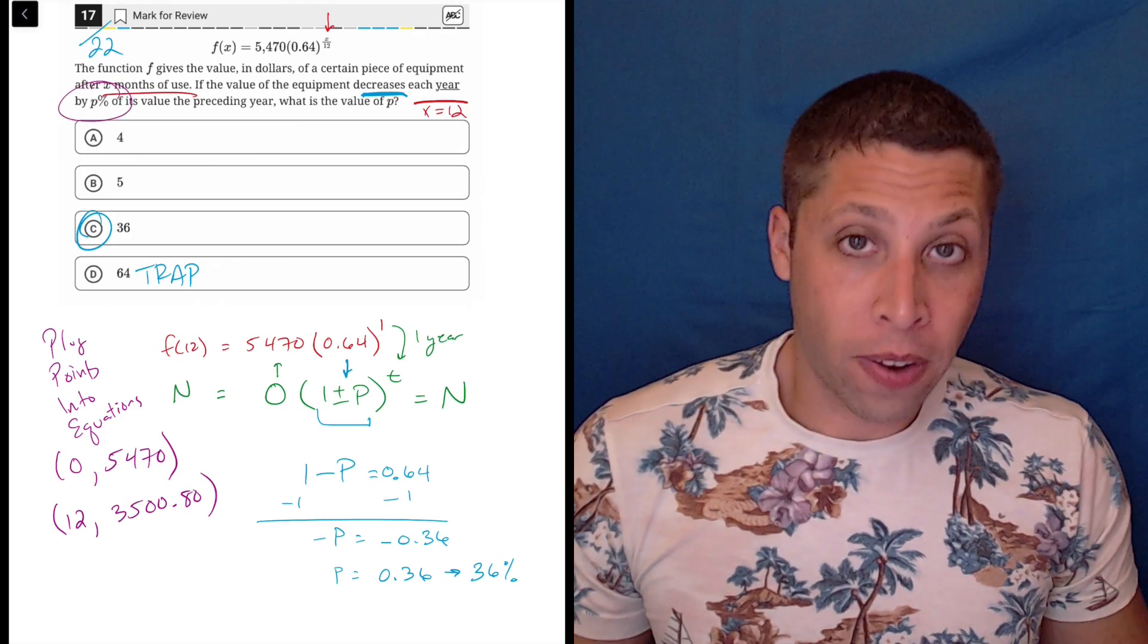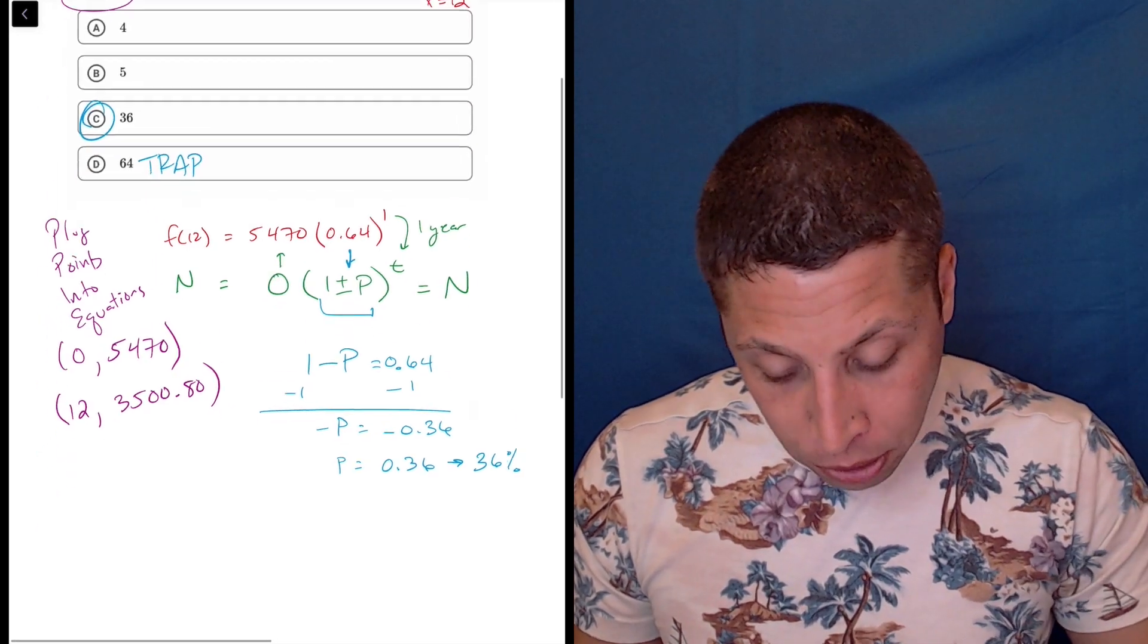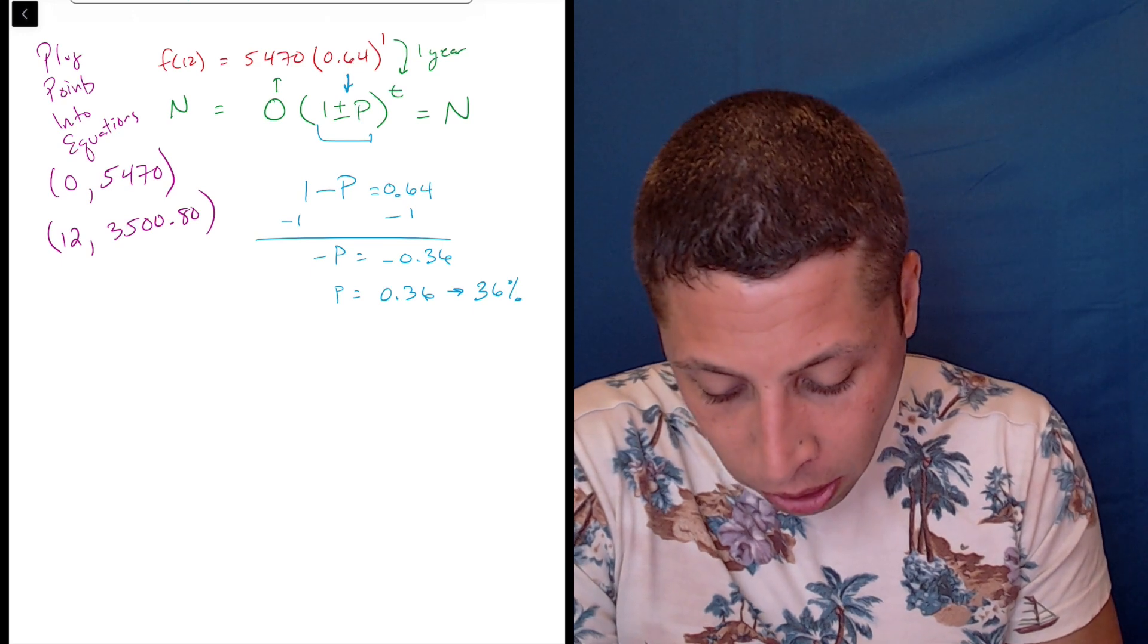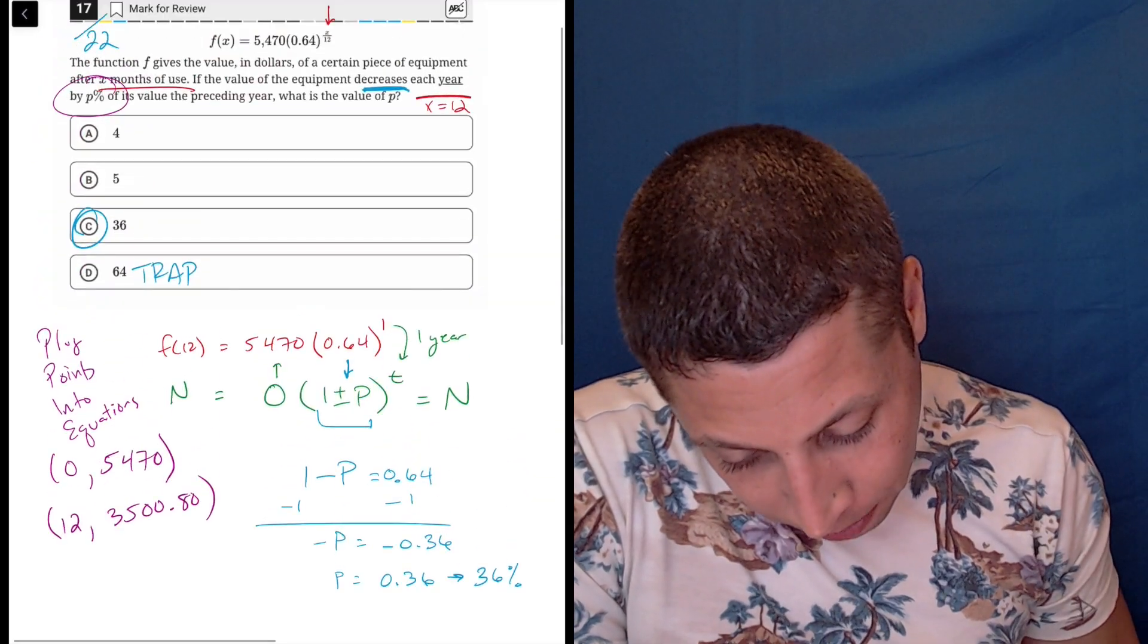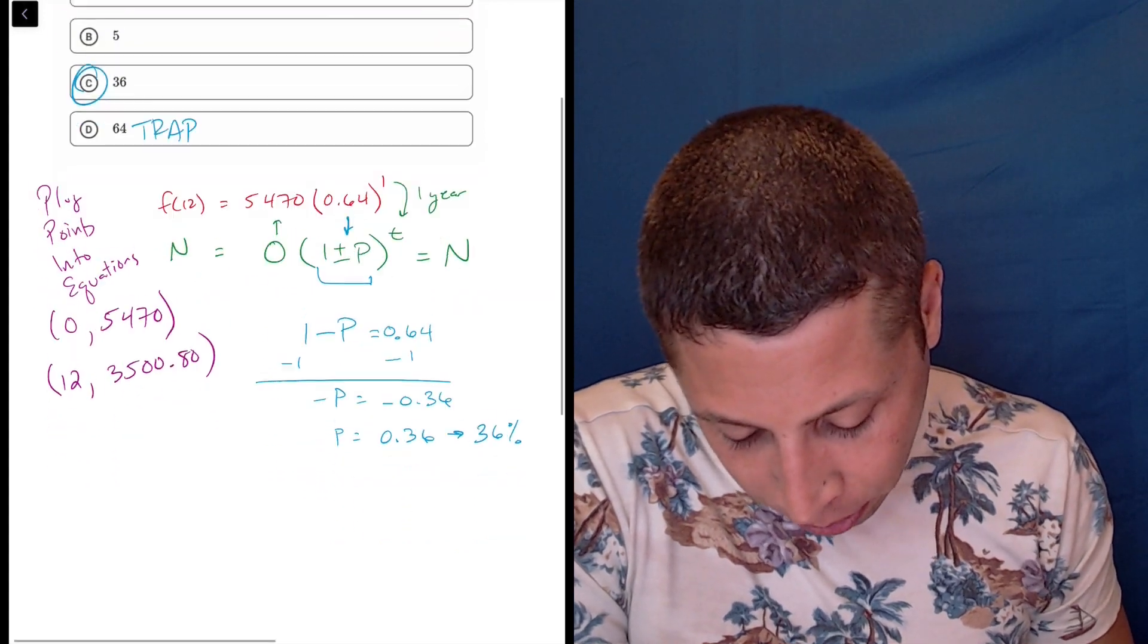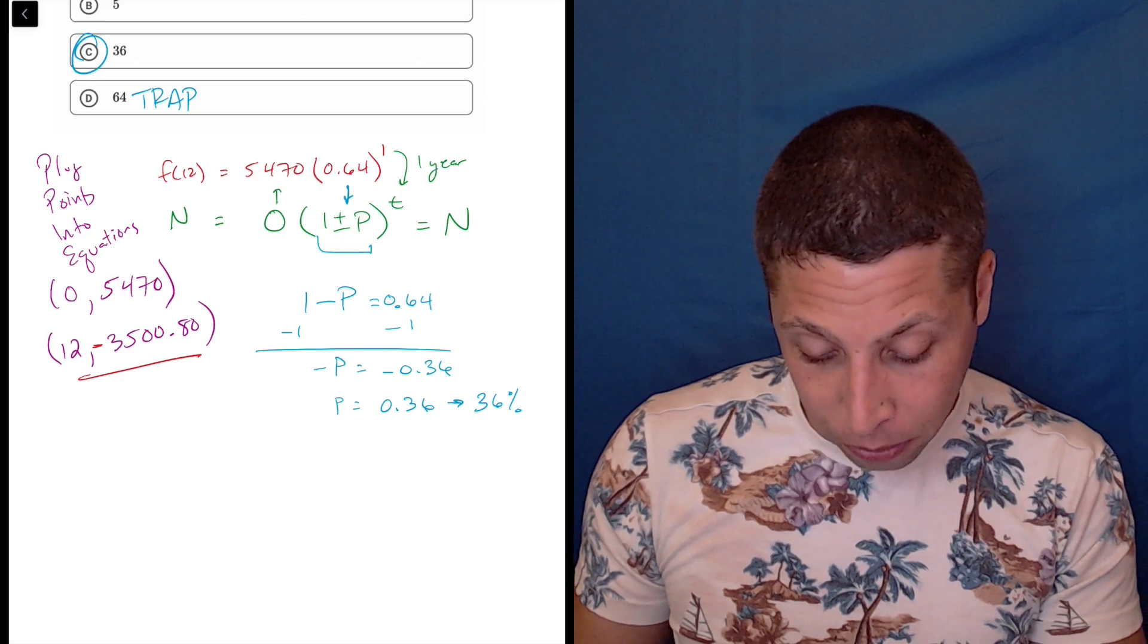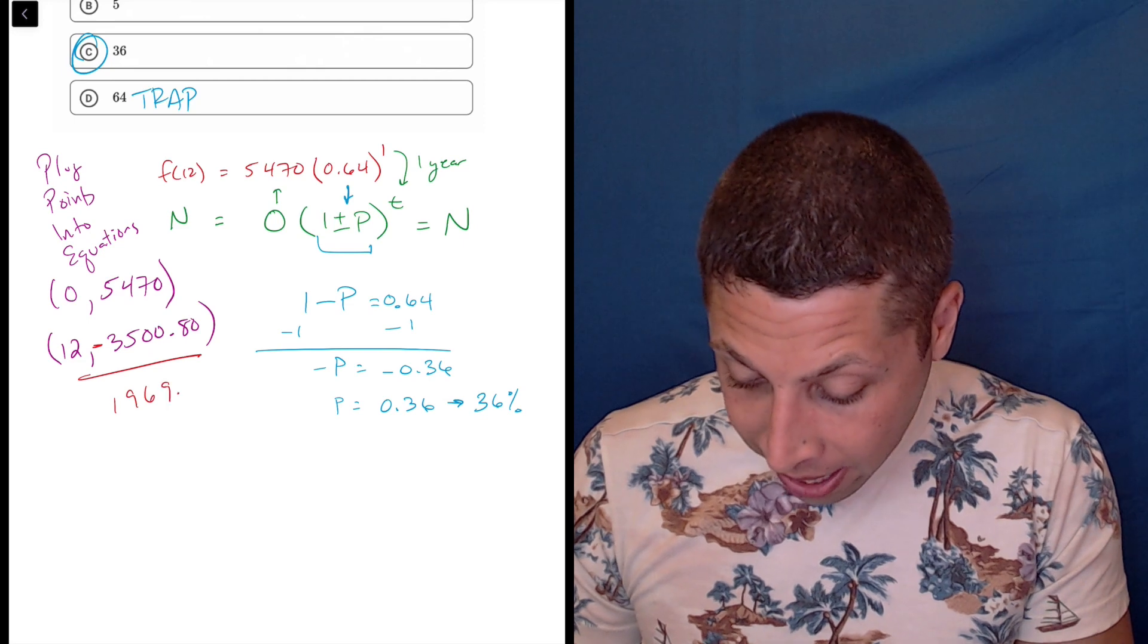Now from there, I can just find the percentage manually because I have two values, right? I have a starting value and then the value after a year. So now I would use my more traditional open formula, which just says, okay, well, what's the difference in decrease? So for this, I'd still use the (1 ± P). What are they asking for? If the decrease each year by P percent, right? So we would actually need to find the decrease. You would subtract to find the difference because the difference is what the decrease is.